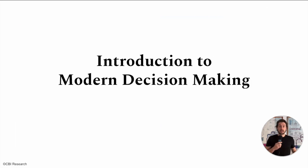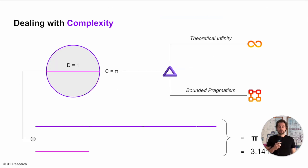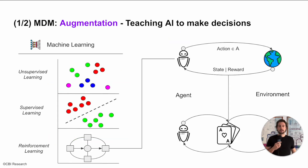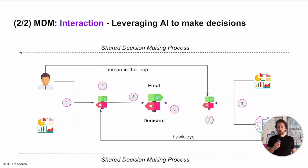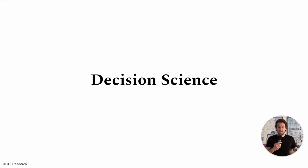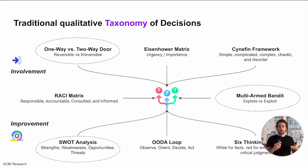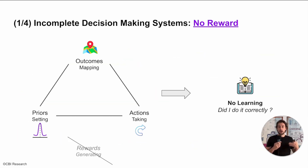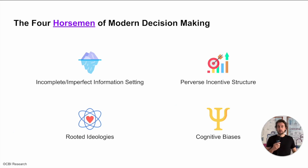We're first going to get a fundamental understanding of what it means to make decisions in the modern world. We're then going to get into the roots of decision science and review together what it means to make objectively proper or improper decisions.